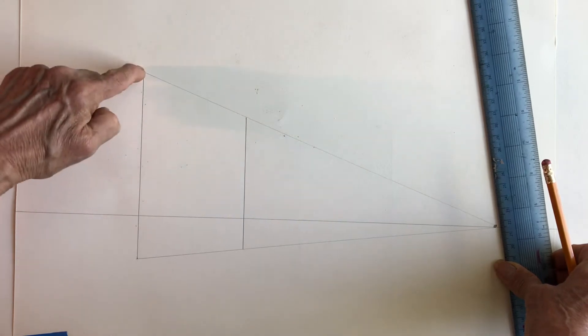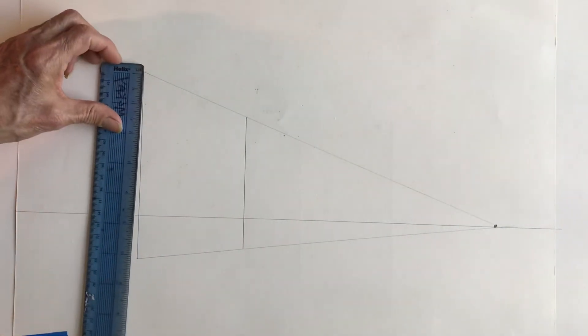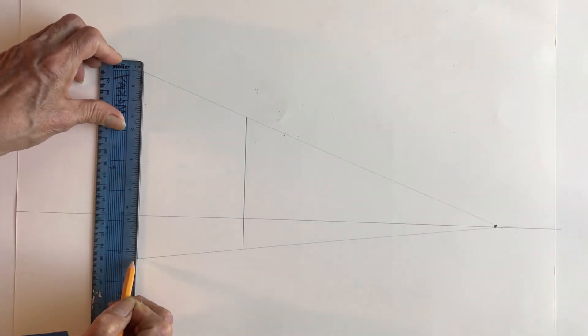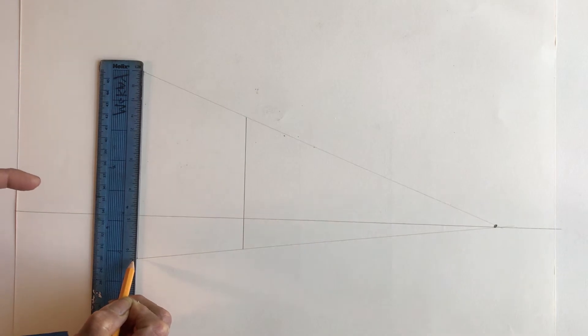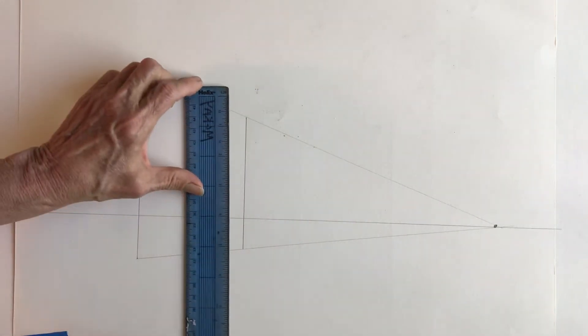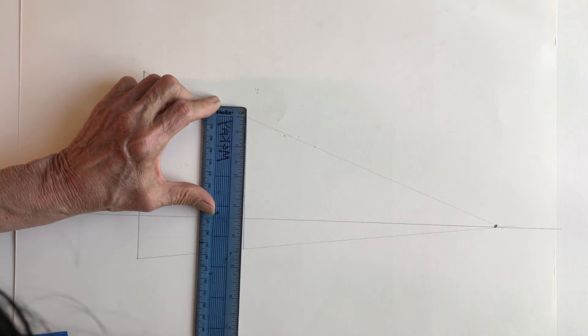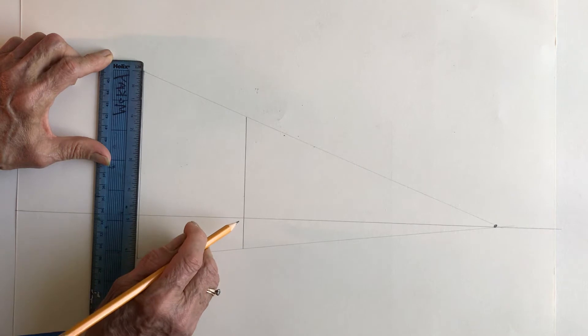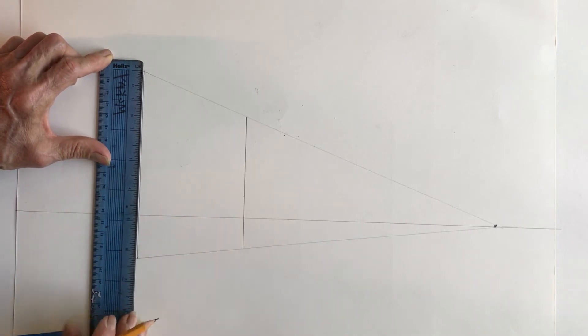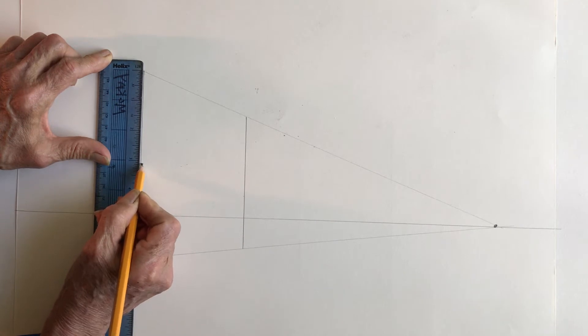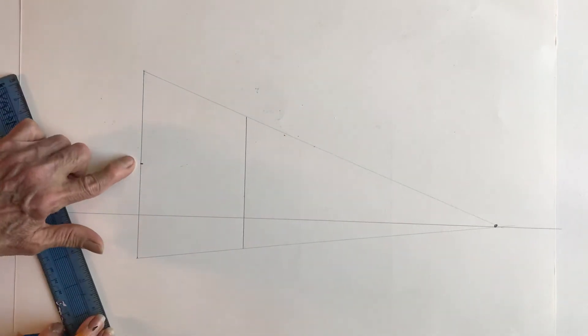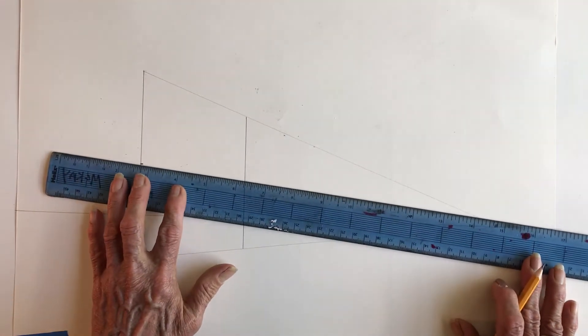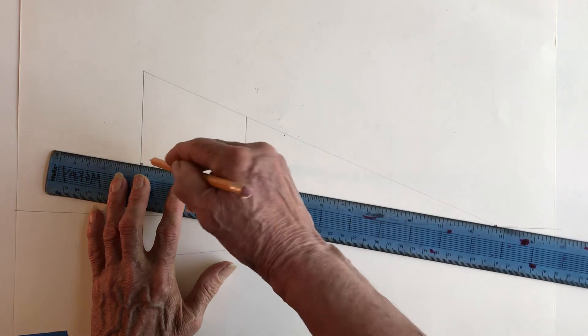Next thing you want to do is measure the exact size of your post. Here I have six and a quarter, which means half of that is three and one eighth. So I'm going to go to, oh, on here, not on there because that one's not six and a quarter. This one, three and one eighth is right here and that's the middle of my post. So now I'm going to go from the middle of my post to the vanishing point.